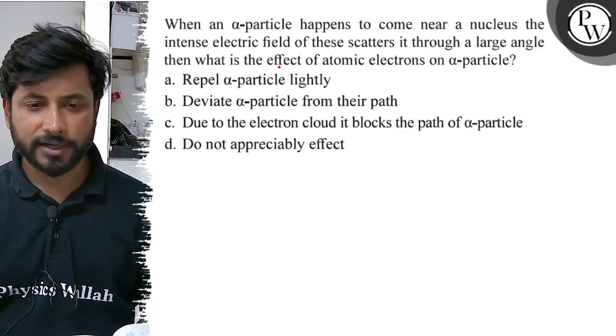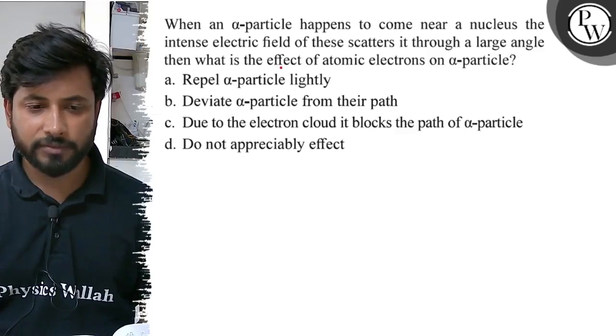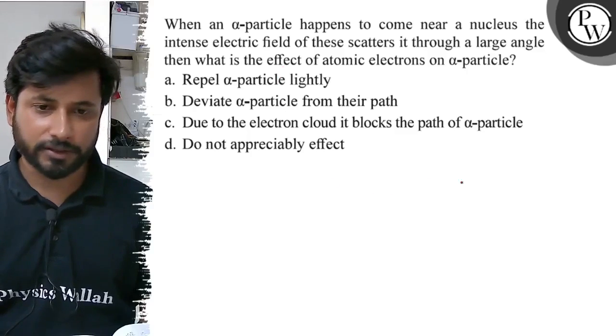Option A: repel alpha particle lightly. Option B: deviate alpha particle from their path. Option C: due to electron cloud it blocks the path of alpha particle. Option D: do not appreciably affect.